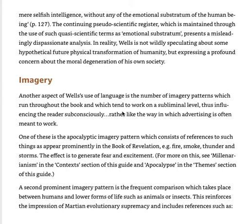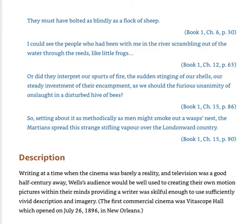A second prominent imagery pattern is the frequent comparison between humans and lower forms of life, such as animals or insects. Wells isn't very impressed by humans. With the idea of Darwinism and the origins of the species, instead of looking forward, he's looking backwards. This reinforces the impression of Martian evolutionary supremacy and includes references such as: 'They must have bolted as blindly as a flock of sheep' — Book one, chapter six, page 30, when talking about the crowd. And: 'I could see the people scrambling out of the water through the reeds like little frogs' — a very unflattering picture of mankind.